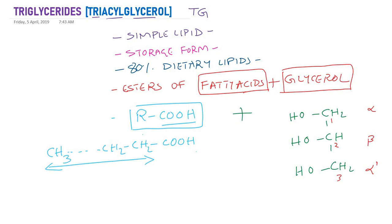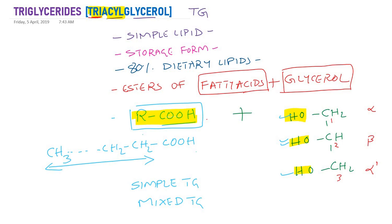The triacylglycerol structure involves esterification of three fatty acids with the alcohol glycerol, where the carboxylic group of the fatty acids is esterified with the hydroxyl group of glycerol. The three fatty acids may all be the same — if so, we call it simple triglycerides. If the three fatty acids are different — some saturated, some unsaturated — we call it mixed triglycerides.